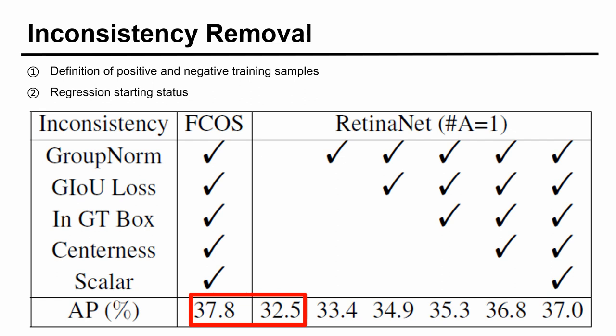We can see that RetinaNet with one anchor only achieved 32.5 AP on COCO, 5.3 points worse than FCOS. However, part of this AP gap results from some universal improvements. They also can improve RetinaNet from 32.5 to 37, but RetinaNet is still 0.8 points worse than FCOS.